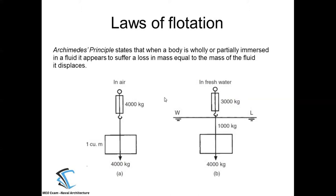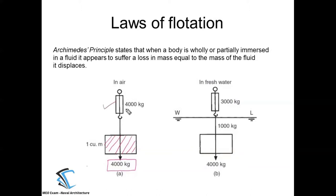So whatever we have seen in the video, let me explain in more detail with the help of some experiments and numerical examples. In front of you I have taken one cuboid whose volume is 1 meter cube, and with the help of a weighing machine I have measured the weight of this cuboid in air — it is 4000 kg. We can call this the actual weight of the object.